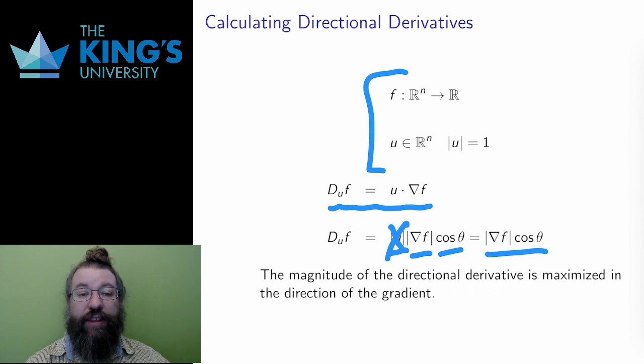What this says is that the directional derivative, the rate of change in a particular direction, is measured by comparison with the gradient.